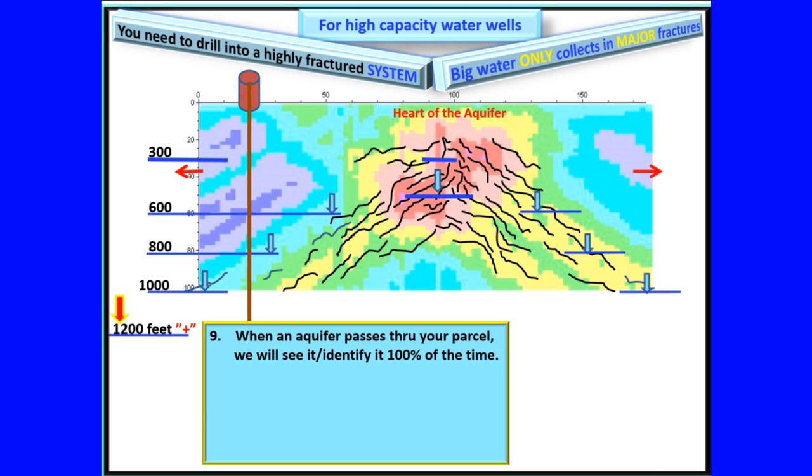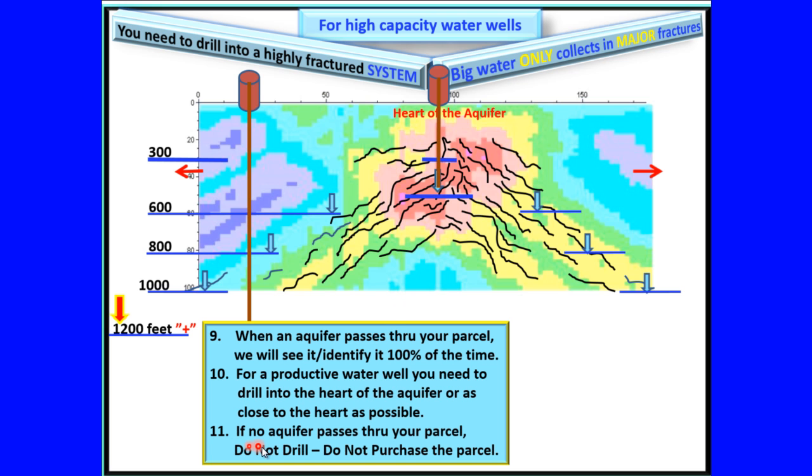When an aquifer system passes through your parcel, we will see it, identify it, one hundred percent of the time. For a productive water well, you need to drill into the heart of the aquifer or as close to the heart as possible. If no aquifer passes through your parcel, do not drill. Do not purchase the parcel.